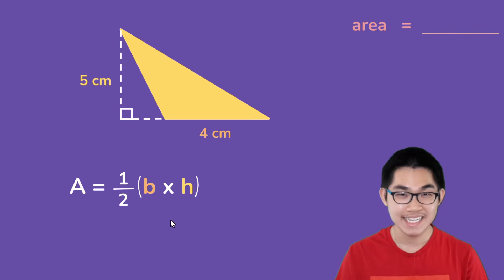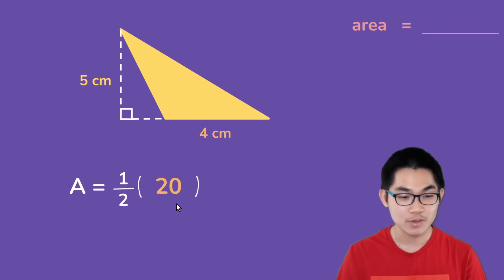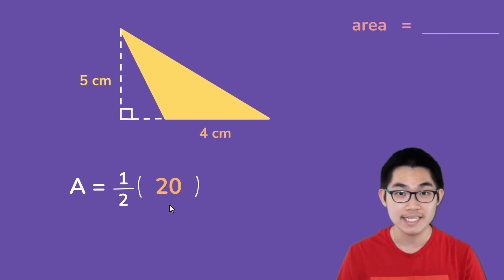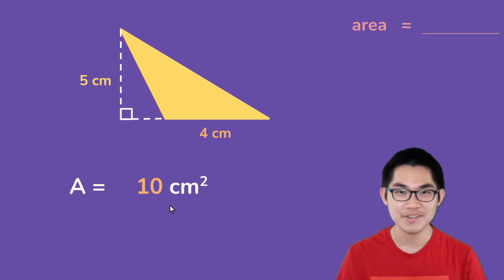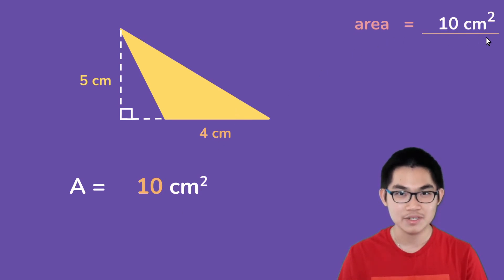So we know that the base is 4 centimeters and the height is 5 centimeters. 4 times 5 gives you 20, and 20 times one half is the same thing as 20 divided by 2, which is equal to 10 centimeters squared. And that is our answer. So in this yellow triangle, the area is 10 centimeters squared.